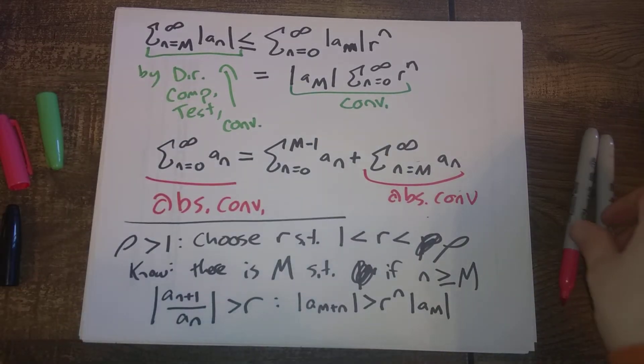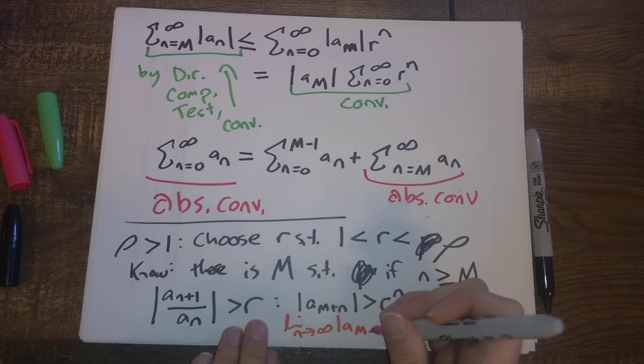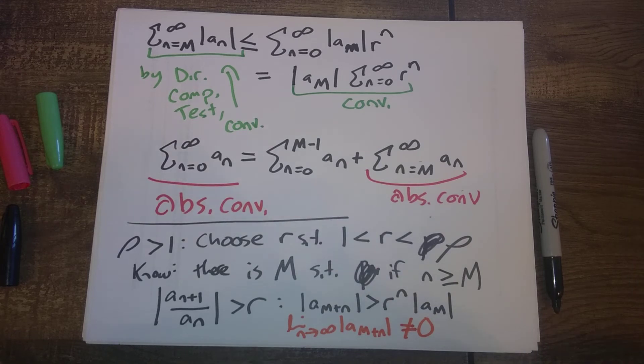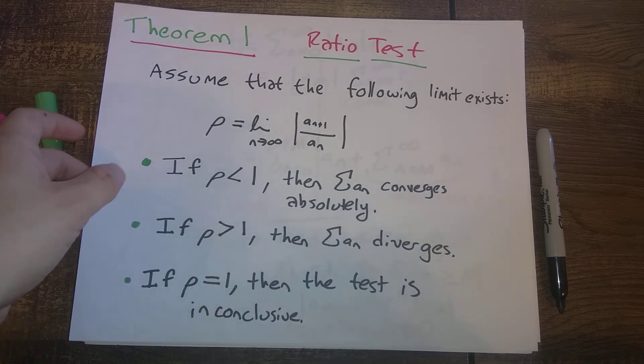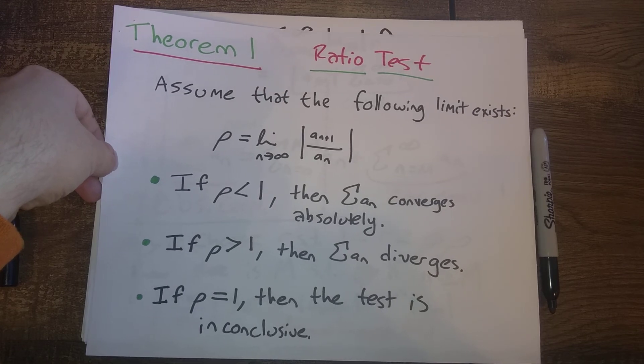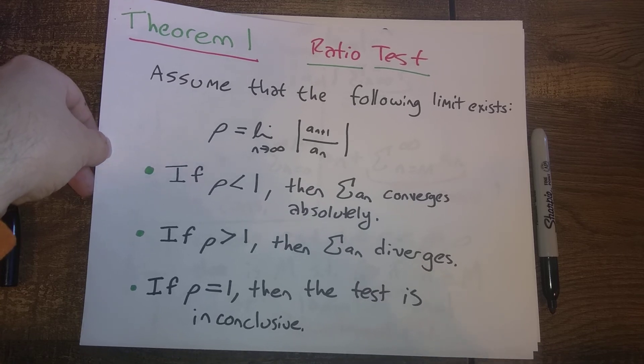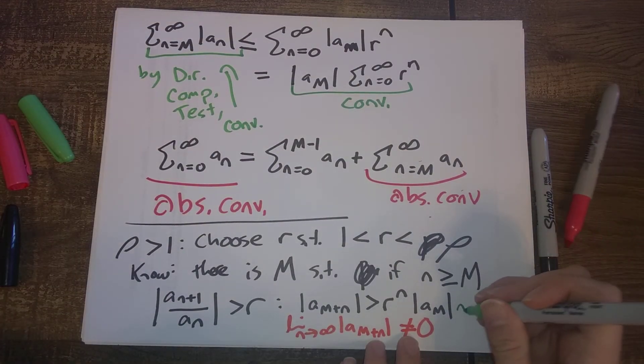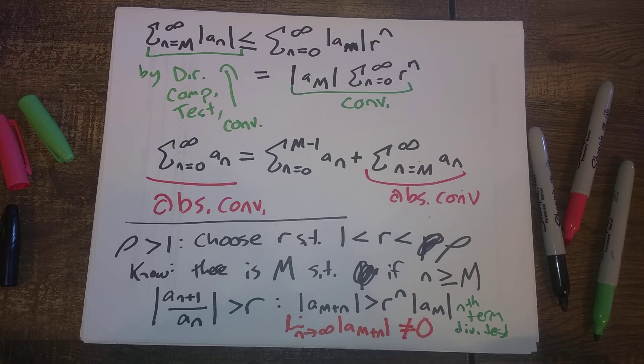And the last thing to observe here is that this is going to tell us the limit as n goes to infinity of a_{M+n}, this is not 0. So what's basically going on here in the ratio test is a fancy way of saying that these terms, the a_n's, are going to get larger and larger in absolute value, and we can lower bound just how big they're getting by some geometric sequence that's going off to infinity. And so this is basically using the nth term divergence test. So that's a sketch of what's going on.